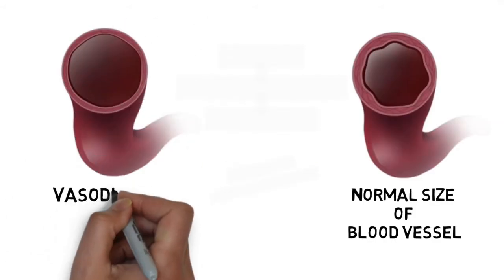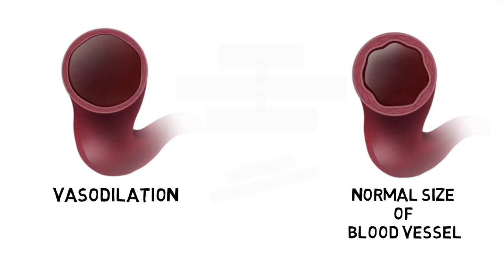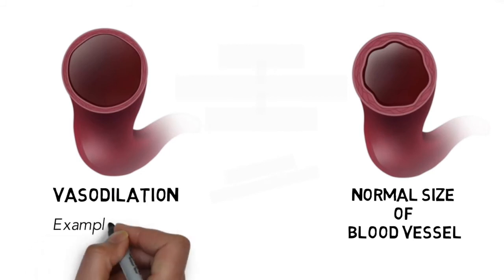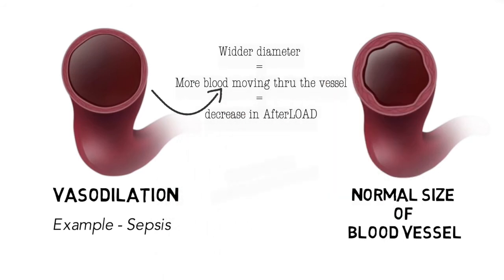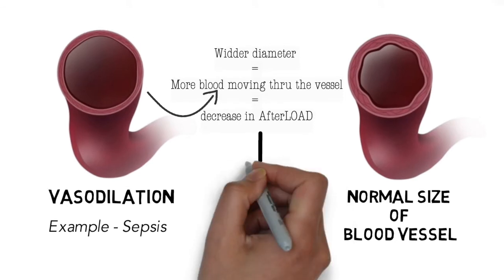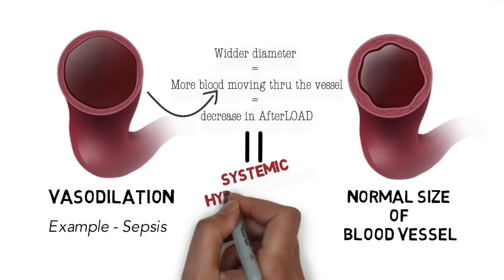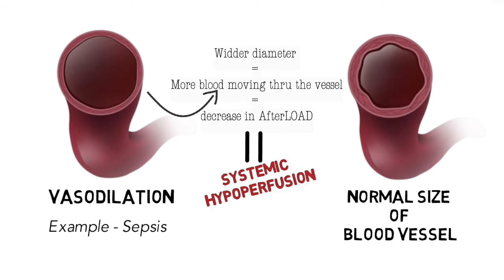On the other hand, if a patient has vasodilation from a pathology like sepsis, it's going to be easier for the heart to pump the blood out, but there is an issue: the pressure is going to be decreased. Because the pressure is decreased, the blood being put out is not going to reach the peripheral organs as needed, resulting in hypoperfusion and hypotension. We'll discuss this in more detail in later videos.